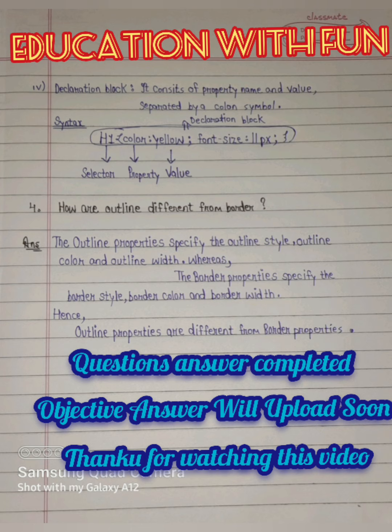Question four: How are outline properties different from border properties? The outline properties specify the outline style, outline color, and outline width. Whereas the border properties specify the border style, border color, and border width. Hence outline properties are different from border properties.